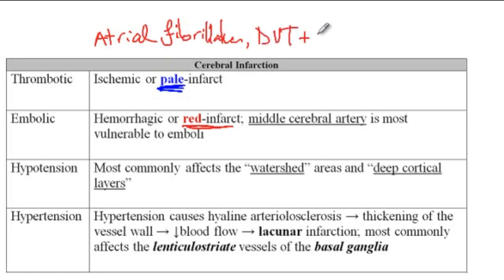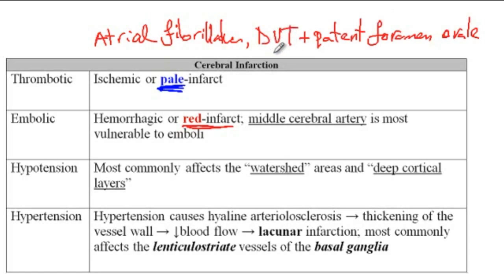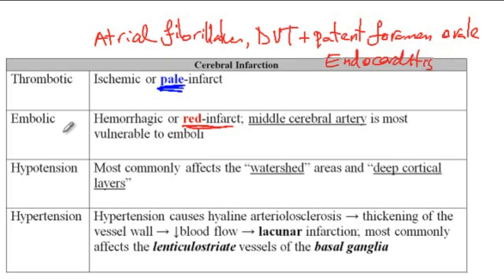DVTs along with a patent foramen ovale are also risk factors. If there is a DVT, it usually goes to the lungs because DVT first goes to the right side of the heart and then to the lung. But if there is a patent foramen ovale, then it could go from the right side of the heart to the left side and from there go to the brain and cause an ischemic stroke. Endocarditis and carotid dissection are the other risk factors to embolic stroke.